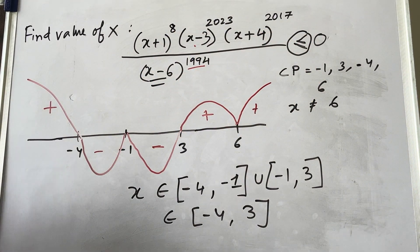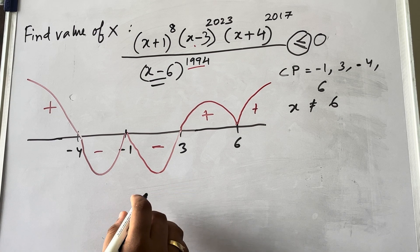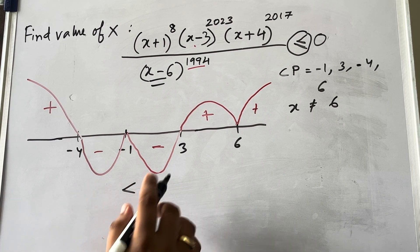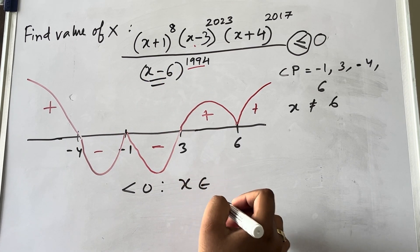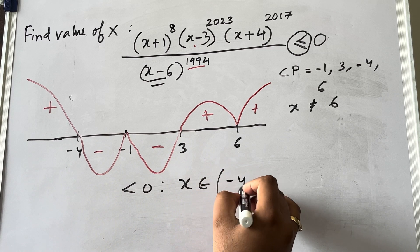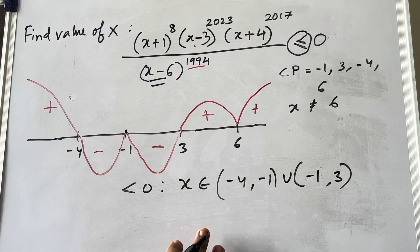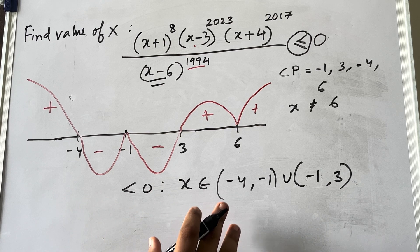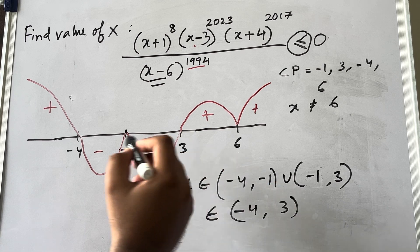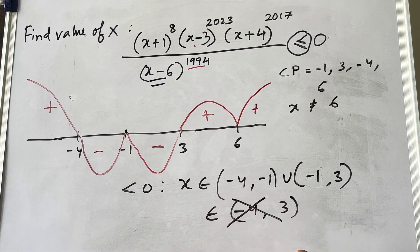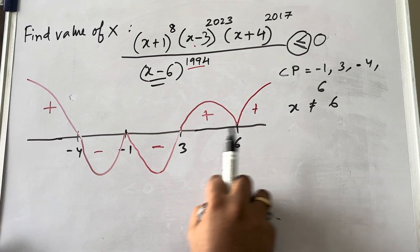Now if the sign were strictly less than zero, the answer would be x belongs to (−4, −1) union (−1, 3) — open brackets since equal-to is not present. You cannot write this as (−4, 3) because that would imply minus one is included, but it is not. You must write it in the two-interval format.